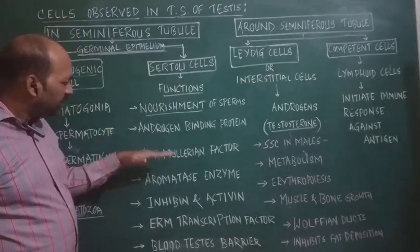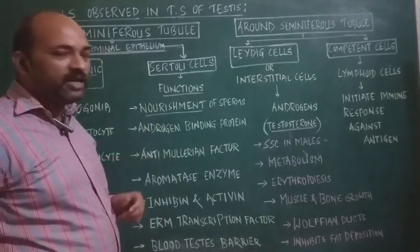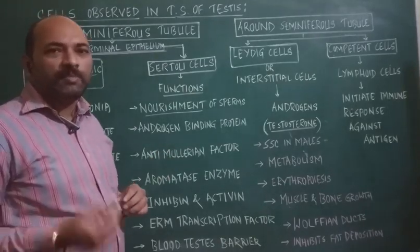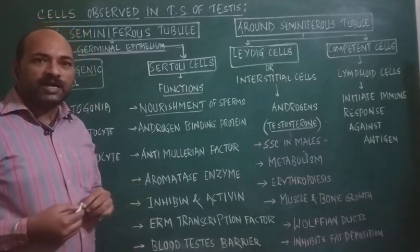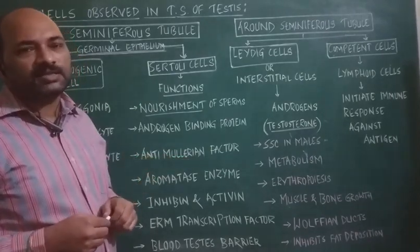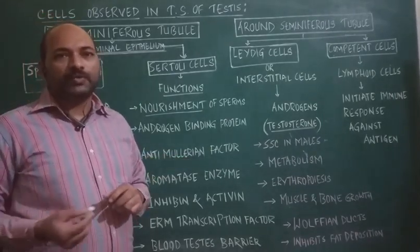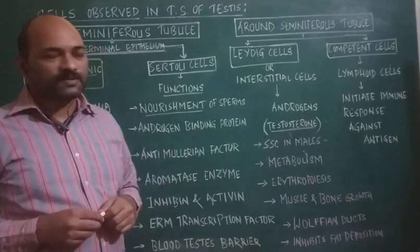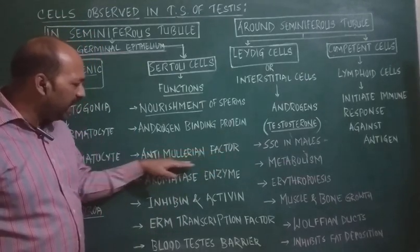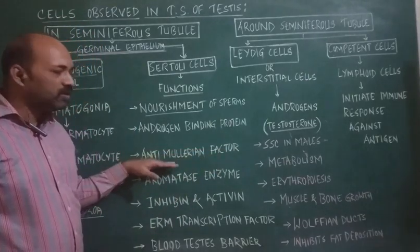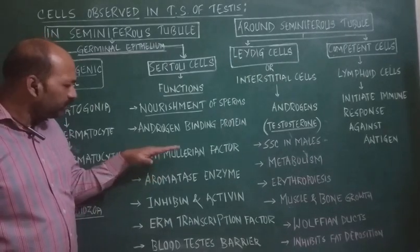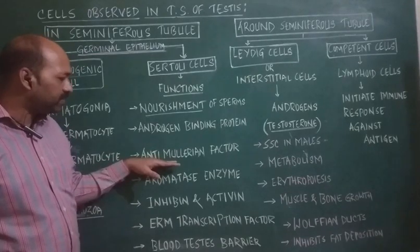Next, Sertoli cells secrete anti-Mullerian factor. This anti-Mullerian factor inhibits the formation of the Mullerian duct during early fetal life. The Mullerian duct generally gives rise to the oviduct, which is a female accessory duct. So the anti-Mullerian factor inhibits the growth of the Mullerian duct, thereby preventing the development of female accessory ducts in males.